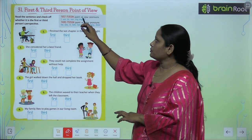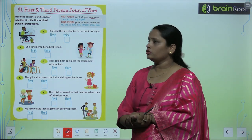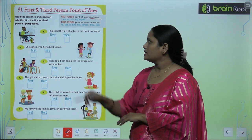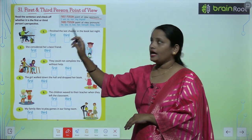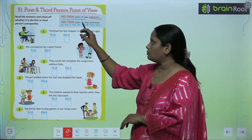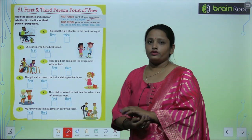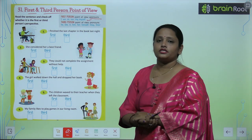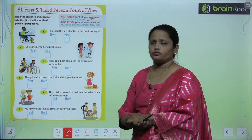First person point of view pronouns: I, we, us, our, my, and myself. So we use these words in the case of first person.